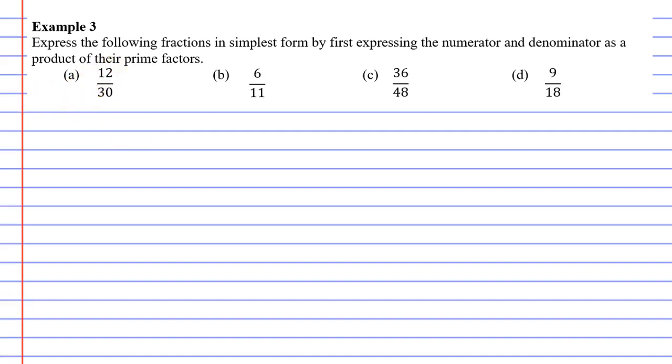Alright, so we have 12 and 30 in question A and we're going to find the prime factors of both 12 and 30 using a factor tree. What numbers multiply to make 12? Well, 3 times 4 makes 12 and 3 is a prime number so we'll circle it. 4 is not, it's composite, so we're going to branch out from the 4.